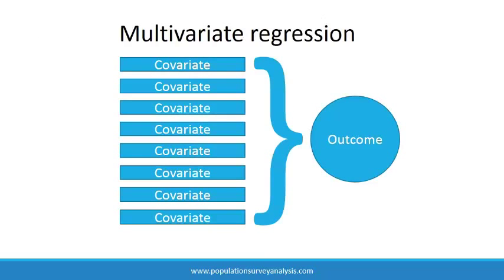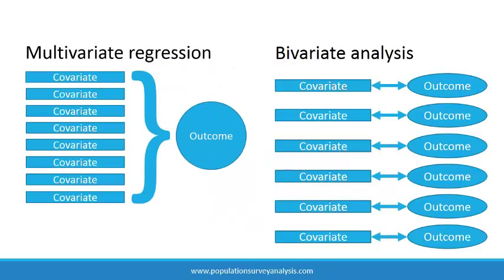Regression analysis allows us to consider the effects or associations of multiple variables at once. Multivariate modeling has an advantage over bivariate modeling by identifying the additional explanatory power of a given variable, accounting for any overlap with other explanatory variables.